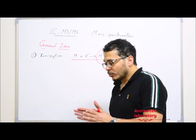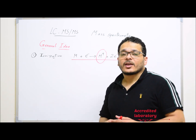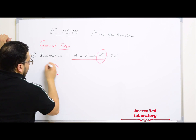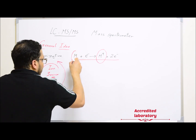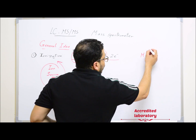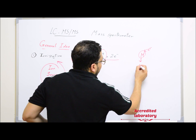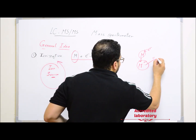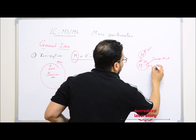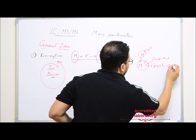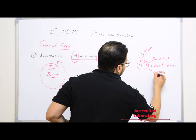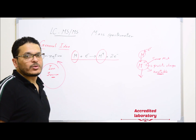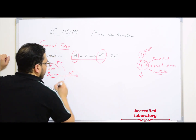Inside the mass analyzer, after sample molecules are transferred by HPLC, they meet the ion source where ionization occurs. An electron hits the molecule, causing it to lose an electron and be converted to a molecular ion, which has the same molecular mass as the original molecule but is positively charged. This molecular ion also has one unpaired electron, making it unstable, so it has a tendency to become stable.